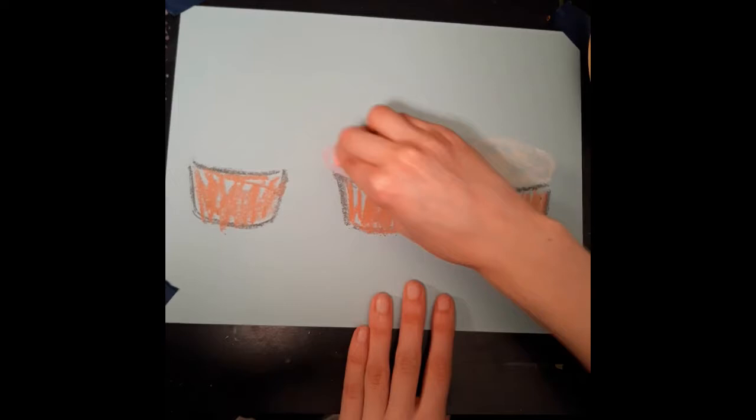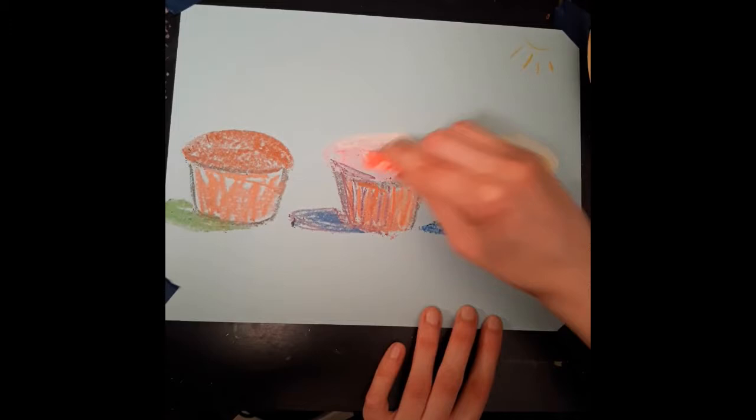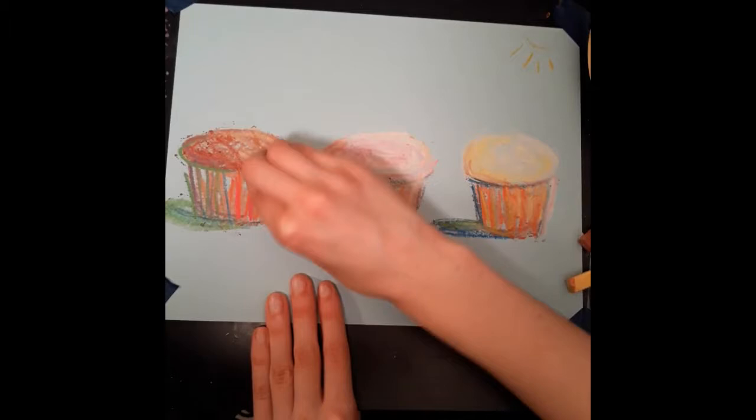After I drew my cupcakes and their icing, I decided where the sunlight would come from. Then I added shadows away from the sunlight. I kept adding shadows on that side of the cupcake using colors that have a darker value and using colors that have a lighter value to add highlights where the light is. I am adding some crazy colors to the shadows like purple and green and orange and pink. Don't be afraid to have fun with colors.